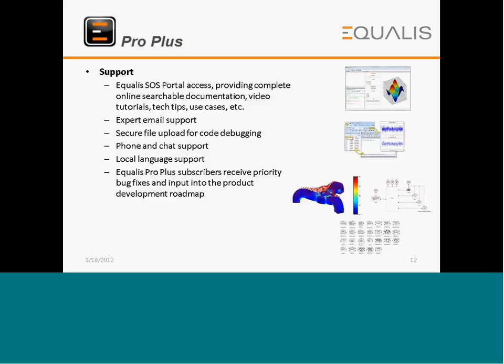Pro Plus support options include access to the Equalist source portal, complete online searchable documentation, video tutorials, tech tips, use cases, expert email support, phone and chat support in local language, and secure file upload for code debugging. Pro Plus subscribers receive priority bug fixes and input into the product development roadmap.